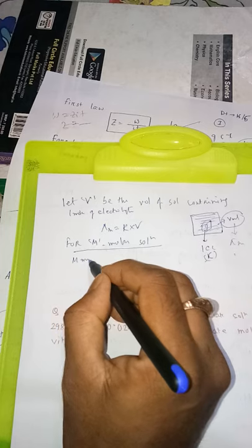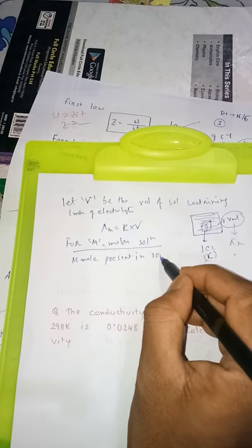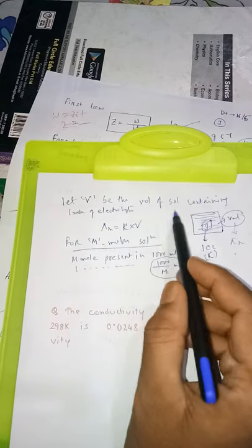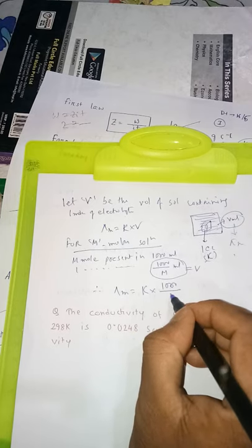Now again we know that for an M molar solution — we don't know how many moles are there — for an M molar solution, M molar means moles per liter, so M moles are present in 1000 ml. So one mole is present in 1000/M ml. This ml is the volume, and that is V — one mole of electrolyte means V is replaced by 1000/M.